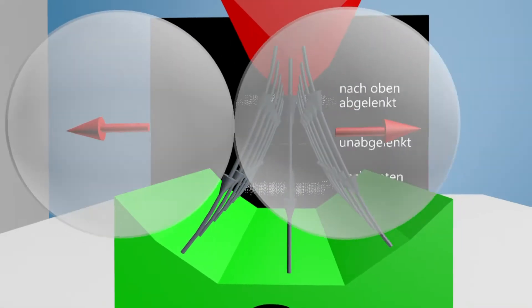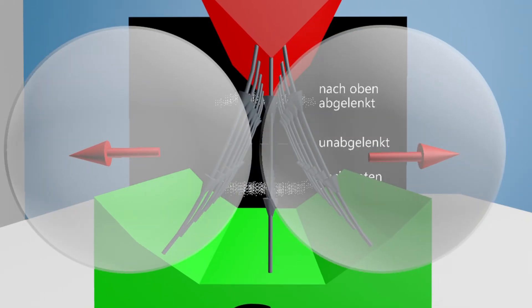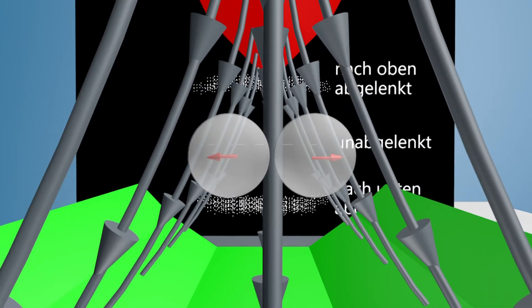Now let's go back to our experiment. As already mentioned, whole silver atoms always fly through the magnetic field.